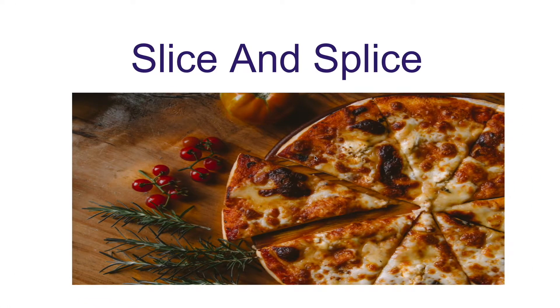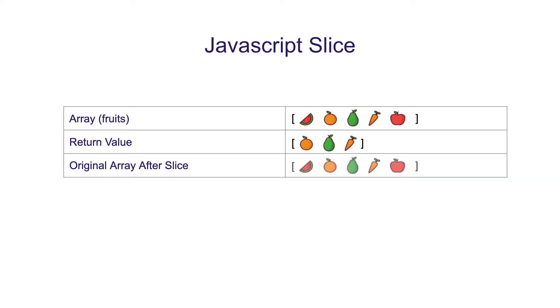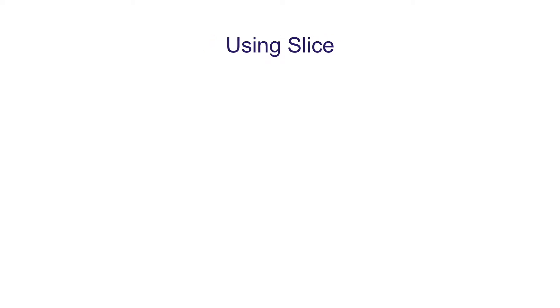You can think of slice and splice as functions that help in fetching a subarray in JavaScript. Let us first talk about JavaScript slice. Assume we have an array with 5 fruits and we need only 3 fruits from position 1 to position 4. In this scenario, the slice function will help us create a new array with the required 3 fruits. The important point to notice is that there will be no impact on the original array — it will remain the same.